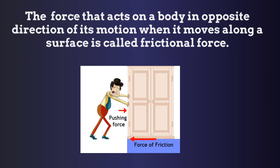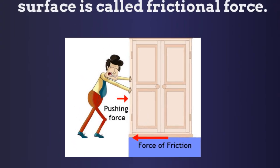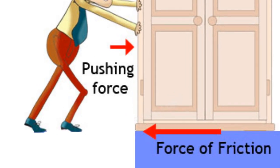The force that acts on a body in its opposite direction of motion when it moves along a surface is called frictional force. That is, the frictional force will act in a direction that is just opposite to the applied force.